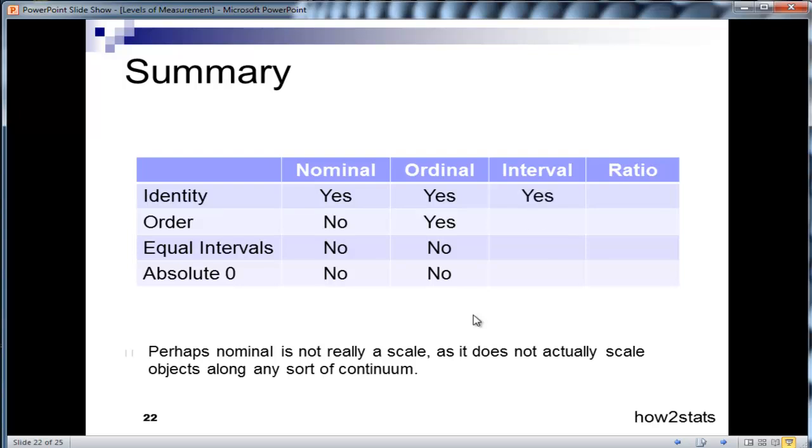Now interval obviously has identity, it has order, and it also has equal intervals. Degrees Celsius was identified as an interval scale, and what it's missing is an absolute zero point, because there's no such thing as a zero degree centigrade.